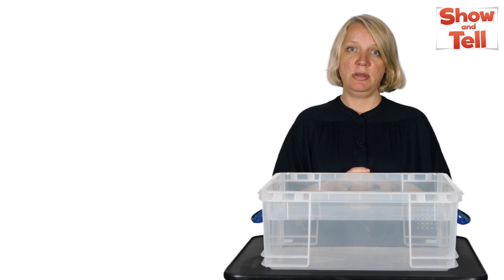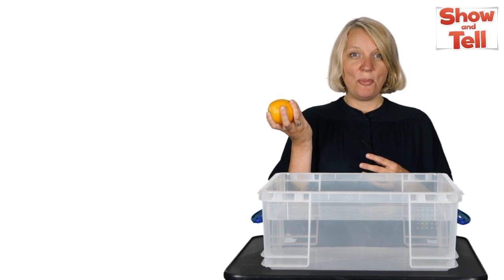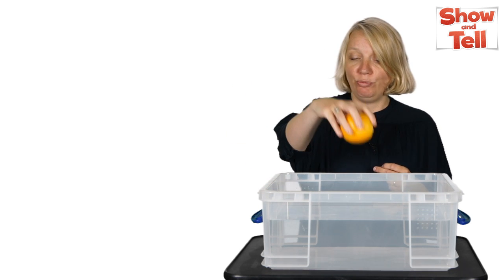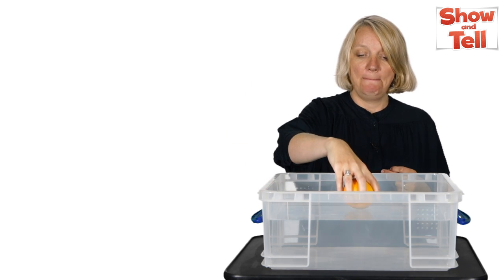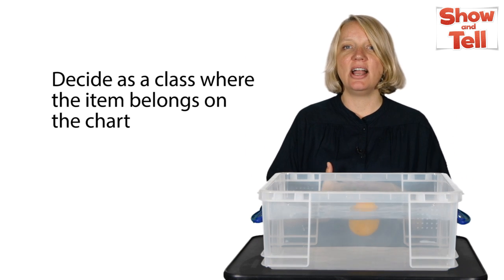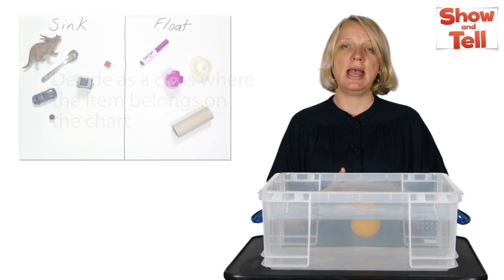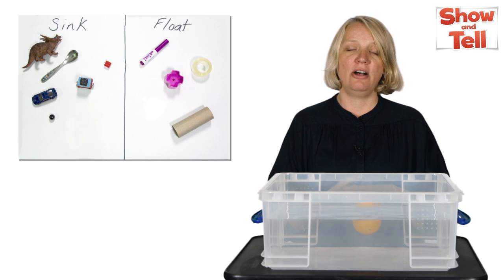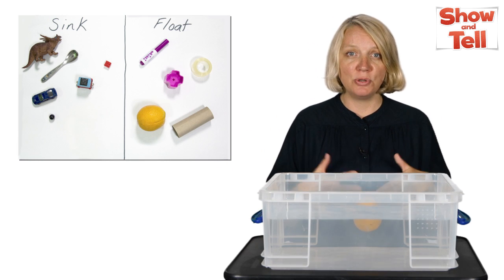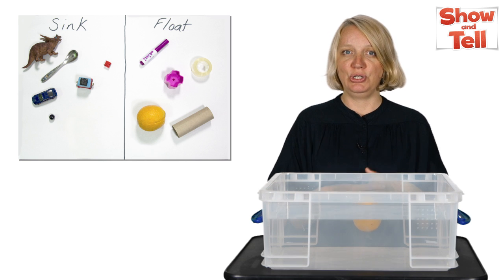Now it's time to experiment. One at a time, have the children drop an object into a tub or large bowl of water. Decide as a class where the item belongs on the chart and place it on the correct side of another large piece of paper. You may want to bring along a towel to dry the object before you do this.